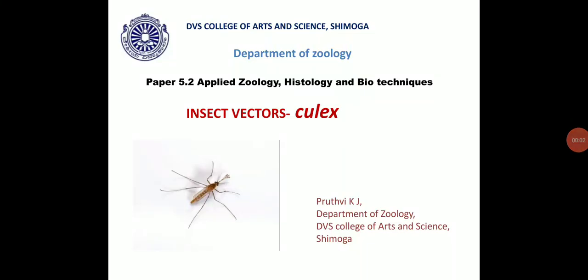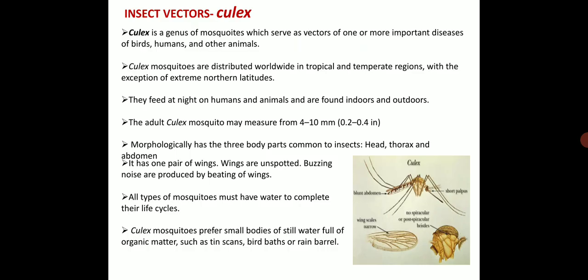Good morning, dear students. Today we are discussing about the insect vector, that is Culex. Culex is a genus of mosquito which serves as a vector of one or more important diseases of birds, humans and other animals. These are distributed worldwide in tropical and temperate regions. They feed at night on humans and animals and they are also found indoors and outdoors.